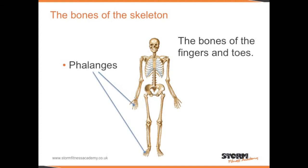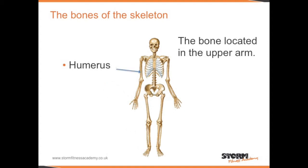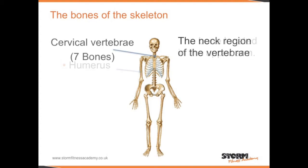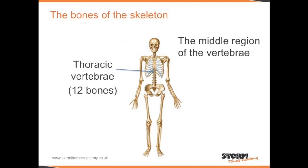The bones of the fingers and the toes are called phalanges. The bone located in the upper arm is called the humerus. The neck region of the vertebrae is called the cervical vertebrae, which has 7 bones. The middle region of the vertebrae is the thoracic vertebrae, which has 12 bones.